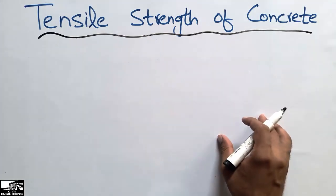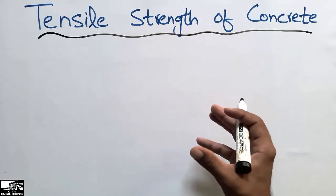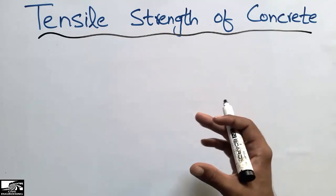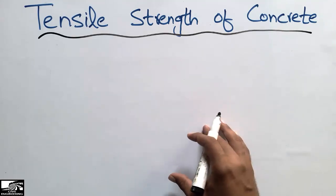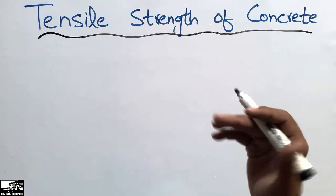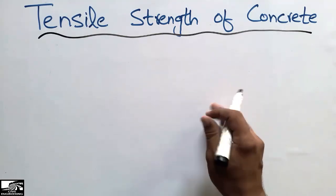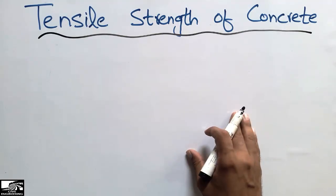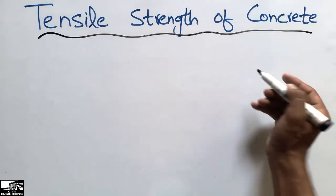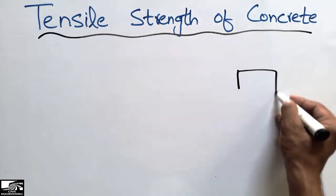...can be found out by making a cylinder or cube. After curing this cylinder or cube, we place it in the universal testing machine, which gives us the compressive strength of the concrete. For example, if this is my concrete cylinder...